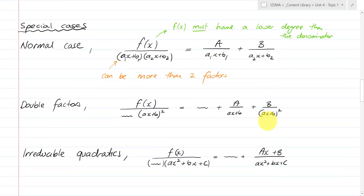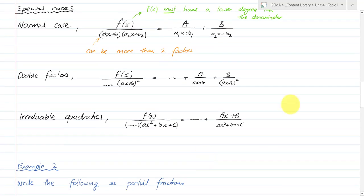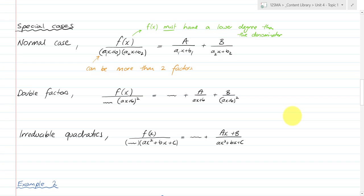Let's have a look at some special cases and some rules. There are a lot of A1s, B1s and similar terms, but basically the normal case is: if you have some function which has to be a lower degree than the denominator — so if the denominator is quadratic, the function on top has to be linear or lower — otherwise some simplification has to take place.